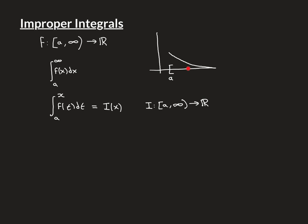If you take a point x, to know what i(x) is you integrate the initial function f from a up until that point x. So if for all points in this domain the integral is defined when you put that x value as the upper limit, then the function i will be defined for all points in this domain, and it will be a real-valued function.